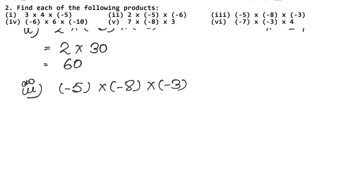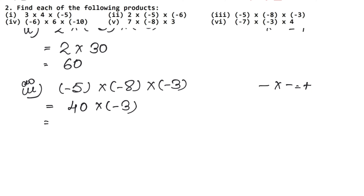We will apply the associative law of multiplication. Let's multiply the first two digits: minus into minus is plus, so plus. 5 × 8 = 40. Now 40 into minus 3: plus into minus is minus, and 40 × 3 = 120. So the answer is minus 120.